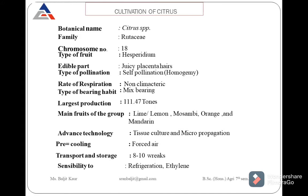For transport and storage, citrus can be stored for 8 to 10 weeks. This citrus fruit is sensitive to refrigeration, so the temperature of storage is 8 to 10 degrees Celsius. If the temperature is lower than 8 degrees Celsius — say 5 or 0 degrees — the fruit will deteriorate very fast. The fruit of citrus is also sensitive to ethylene.